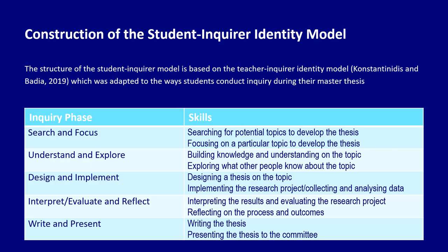The resulted model is presented in the table. The inquiry process starts with a phase titled search and focus, where students are searching for potential topics to develop their thesis and then focusing on a particular topic. The second phase is understand and explore, where students are building knowledge and understanding on the topic and exploring what other people know about it. The third phase is design and implement, where students are designing and implementing a research project. The fourth phase is interpret, evaluate and reflect, where students are interpreting the results, evaluating the research project, and reflecting on the process and outcomes. The last phase is write and present, where students are writing the thesis and presenting it to the committee.